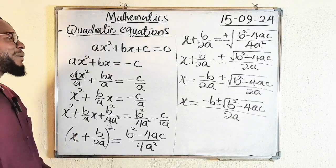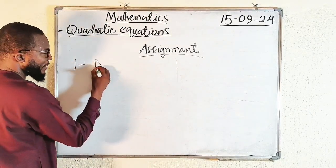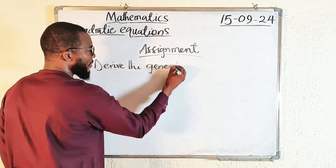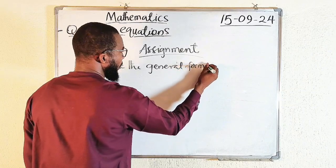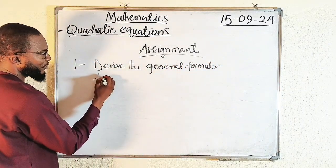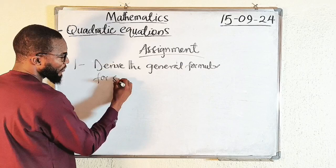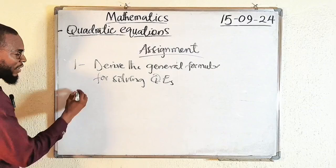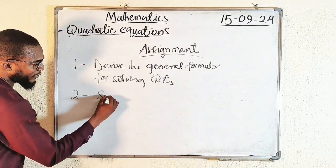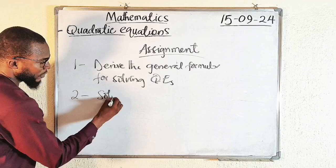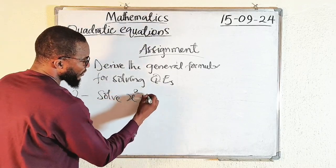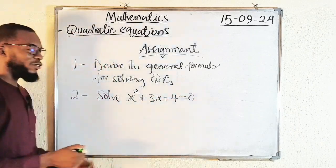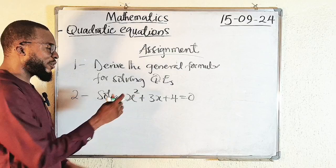Now let me give you an assignment. Number one, derive the general formula for solving quadratic equations. Then number two, solve x² + 3x + 4 = 0. I want you to solve this quadratic equation using the general formula.